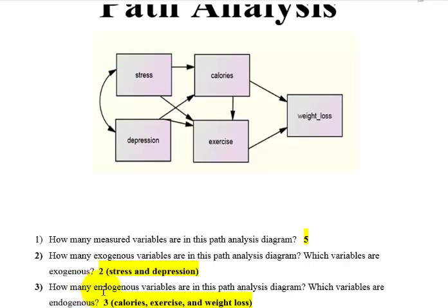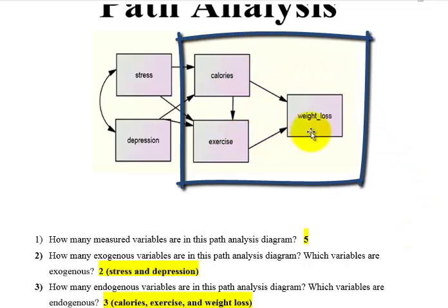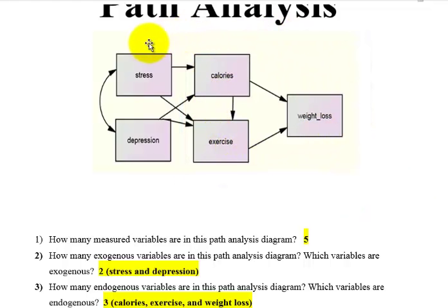Number three: how many endogenous variables are in this model? An endogenous variable is any rectangle that has an arrow going in. So if a rectangle has an arrow going in and out, it is still considered endogenous. We have three: calories, exercise, and weight loss. A quick heads up — exogenous variables do not get error terms.